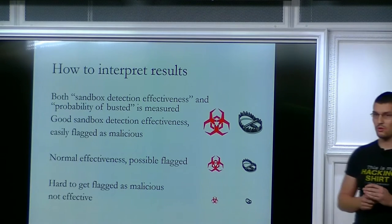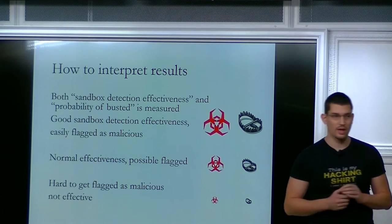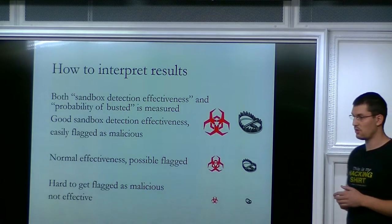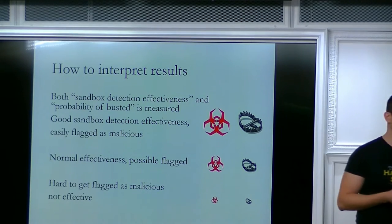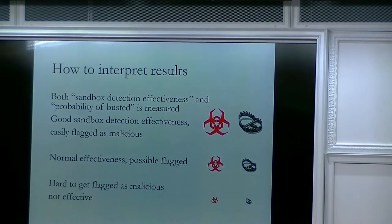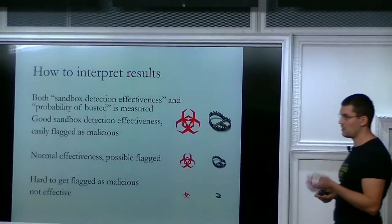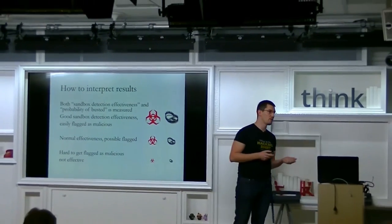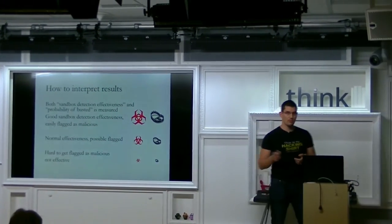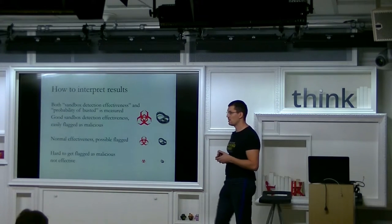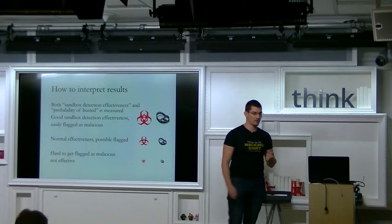Okay, so in the next slides, I'm going to show you some of the tricks I have used in my malware. And whenever you see this red, big red thing, it means that this trick has a good sandbox detection effectiveness. It's small, it's not a very effective way to detect sandboxes. And when you see a trap, and it's big, it means that this technique can be easily flagged as malicious, or it is already flagged as malicious in a lot of times. But if it's a small trap, then you as an attacker know that this is a good way to detect sandboxes because your malware won't be flagged as malicious.